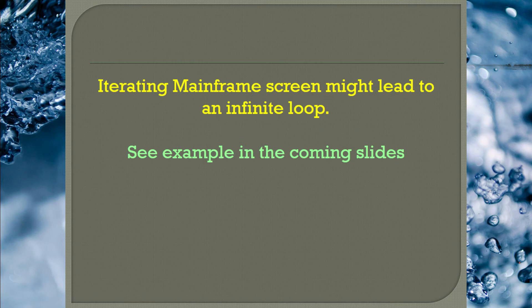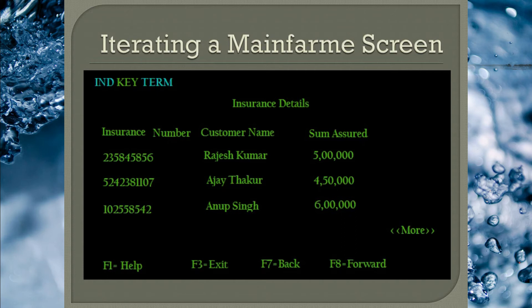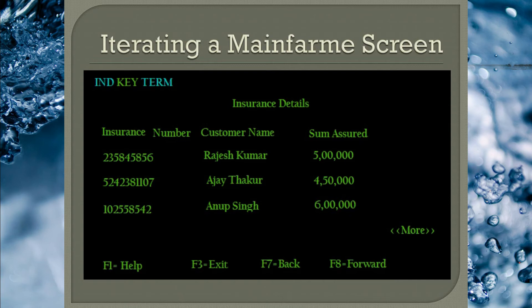Now let me show a sample insurance detail screen that has details of all customers, including license number, customer name, and assurance information. To see more records, we have to press F8 to navigate downward. I have written a function to search for a required insurance number in this screen. The process is simple — I start from the row where the insurance number is first displayed, retrieve the value, and compare it with my expected value until I reach the last row.